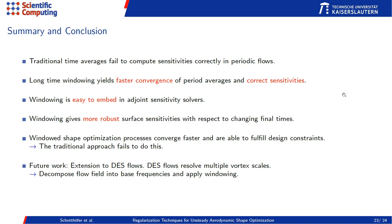Let's end with a quick summary and conclusion. Traditional time averages fail to compute sensitivities correctly in periodic flows. In contrast, long-time windowing yields faster convergence of periodic averages and correct sensitivities. Windowing is easy to embed in adjoint sensitivity solvers and gives robust surface sensitivities with respect to changing final times. Windowed shape optimization converges faster and is able to fulfill design constraints — something the traditional approach fails to do. As future work, I want to apply windowing to scale-resolving methods, where multiple frequencies are present, by decomposing the flow output and applying windowing to each base frequency.